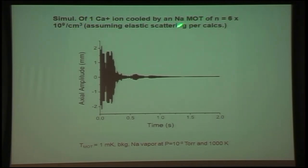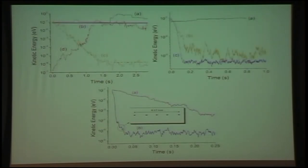This is about the time we started doing the experiments. It's been sort of a 10-year effort, and I don't claim it was as difficult as the hydrogen BEC, but sometimes these things take longer than you expect. Here is a simulation of a single calcium ion cooled by a sodium MOT of this density, assuming elastic scattering only. You can see that within about a half a second or less, the amplitude of the motion goes down to a very small fraction of the initial amplitude. We started with calcium ions at a thousand Kelvin, and there was a background sodium vapor at 10 to the minus 9.